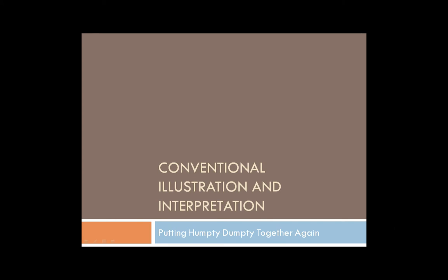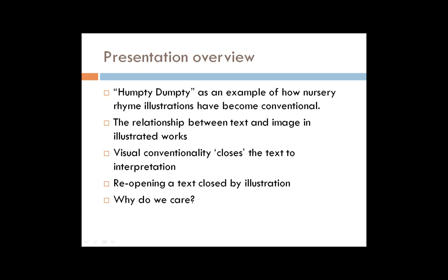The basic overview of this presentation is that I'm going to bring forward the illustrations of the nursery rhyme Humpty Dumpty as an example of how illustrations become conventional, and the way that that conventionality then impacts the relationship between text and image in illustrated works, and moreover to talk about how that conventionality closes the text to interpretation. I've got three key methods that I've used with young readers and even my college children's literature courses to reopen those texts that have been closed by illustration, and the last bit will be extrapolating on that process to talk about how it impacts visual literacy in general.